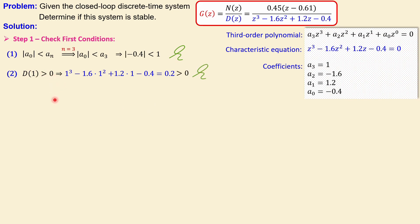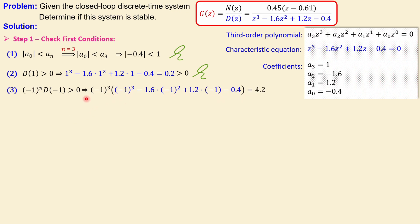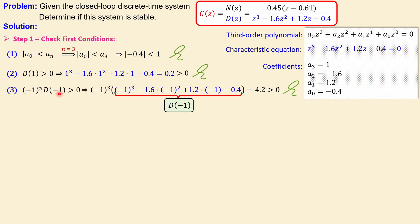The third condition is that (−1)^n × D(z = −1) must be larger than zero. Substituting z = −1 into the characteristic equation and multiplying by (−1)³ = −1: working this out gives 4.2, which is again larger than zero. So all three initial conditions are met. If any one of these had failed, we could immediately conclude the system is unstable without continuing.